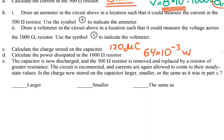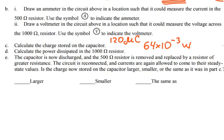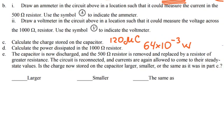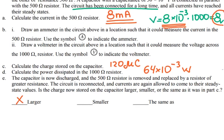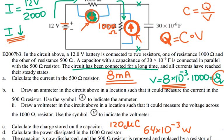So the answer for part E is larger. The voltage dropped on the new resistor is increasing, meaning the voltage across those two points is higher, which gives a higher charge on the capacitor.